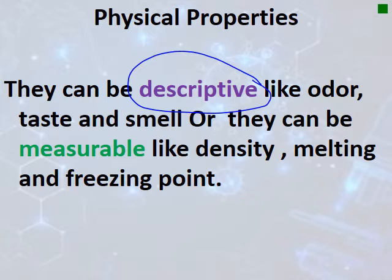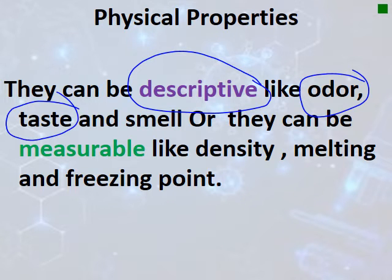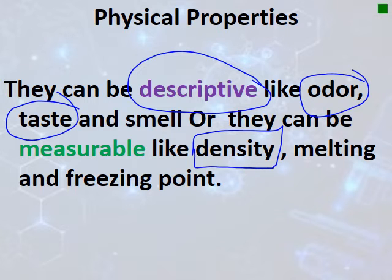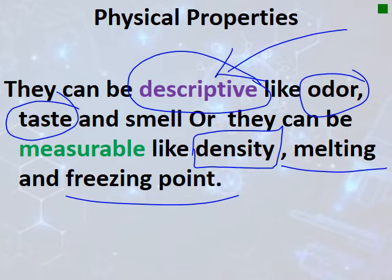The first group is descriptive — they describe something, like odor or smell and taste. The second group is measurable — we can measure them using specific instruments. For example, temperature is measured using a thermometer. Other measurable properties include density, specific gravity, and melting and freezing points. Properties we cannot measure are classified as descriptive.